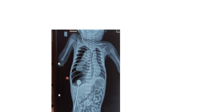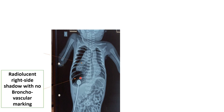This is another x-ray showing a radiolucent shadow on the right side of the lung field — a radiolucent shadow without any bronchovascular marking. You can also see the collapsed right lung field. The right lung is collapsed because of right-sided tension pneumothorax.